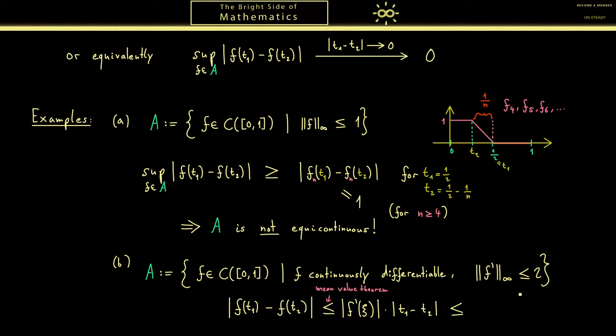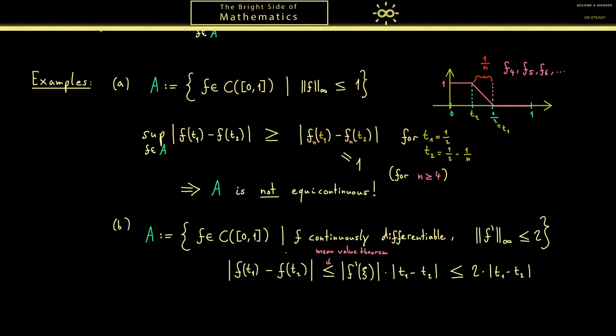Now knowing that the supremum norm of f' is less or equal than 2 we know that this thing is always less or equal than 2. Hence we get a better estimate out here which is 2 times t1 minus t2. Now for the next step we can just apply the supremum on the left hand side and get the same estimate. So we can conclude if we apply all possible limits that have that t1 minus t2 tends to 0 then this also tends to 0. Therefore by definition this set A is now equicontinuous.